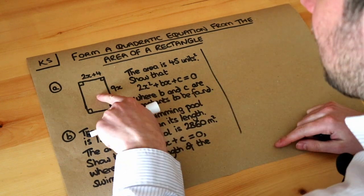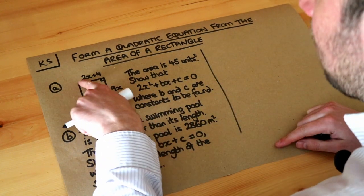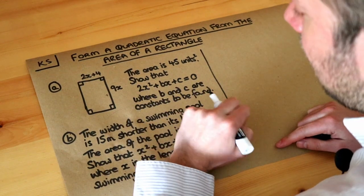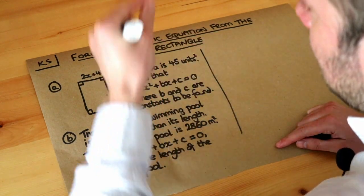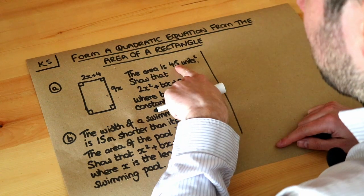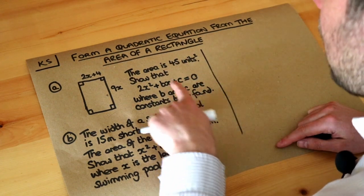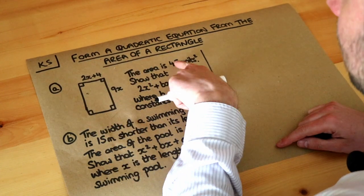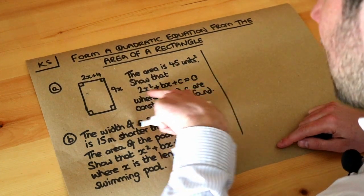So we've got this rectangle here. We've got a width of 2x plus 4 and a length of 9x. Remember with a rectangle, the length is the longer side and the width is the shorter side. And we're told the area is 45, and we're going to show that using this information combined with the area that we can get this equation.